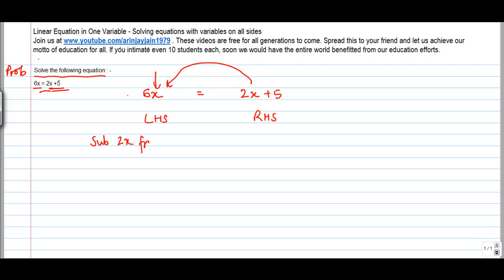Subtract 2x from both sides. I will get 6x - 2x = 2x - 2x + 5. So this cancels with this. I'm only left with 5 on this side.